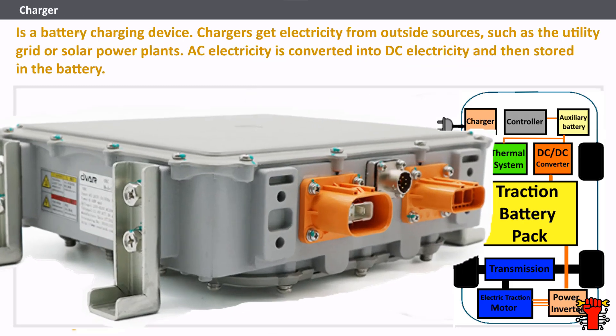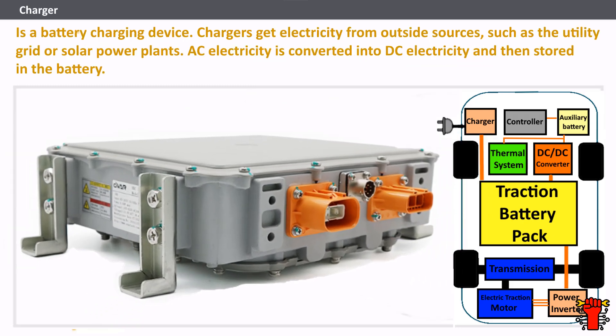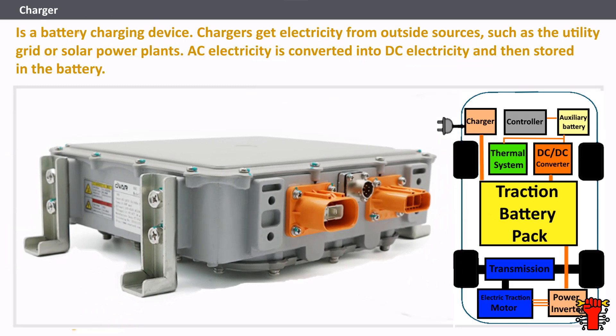The onboard charger is a battery charging device. Chargers get electricity from outside sources such as the utility grid or solar power plants. AC electricity is converted into DC electricity and then stored in the battery.